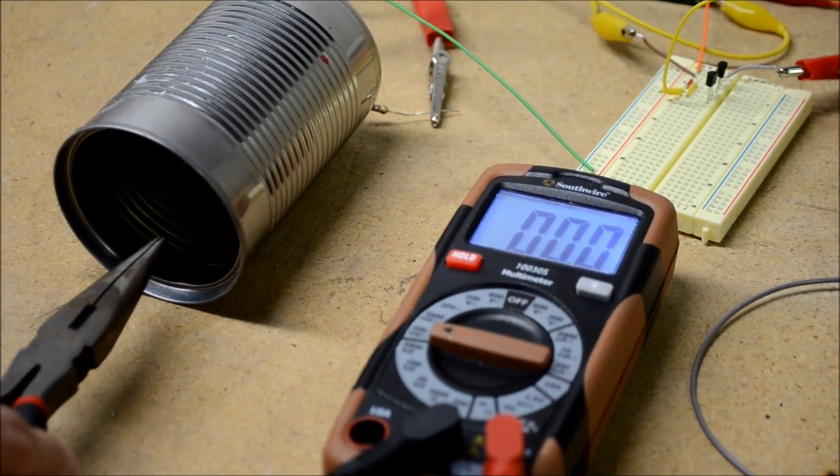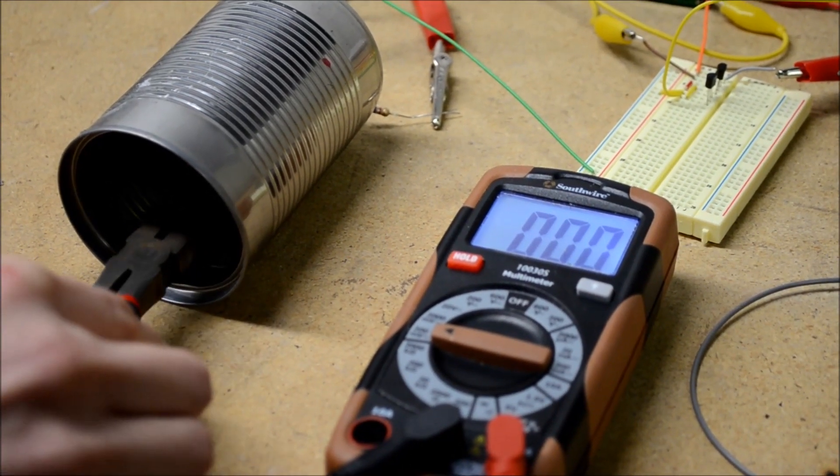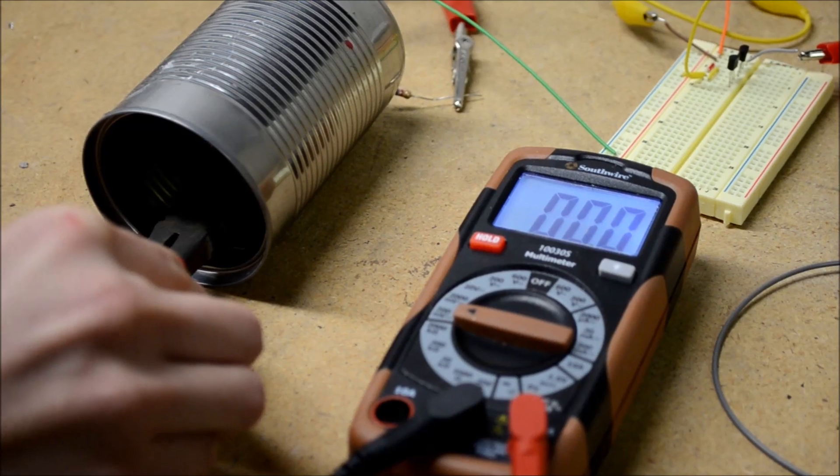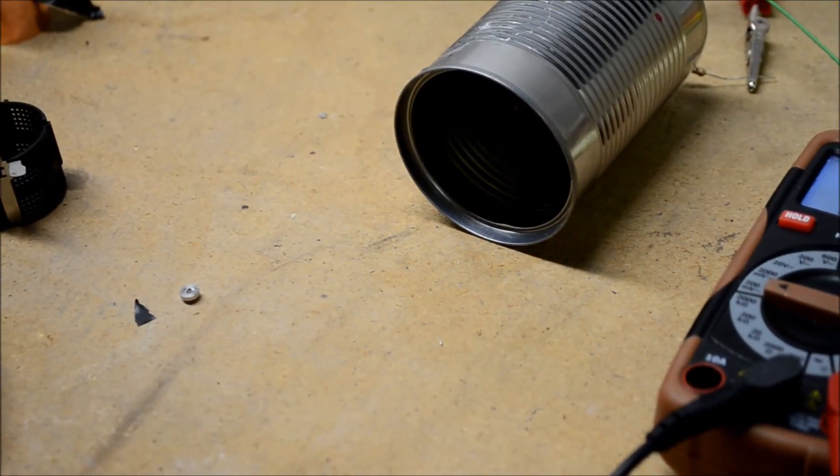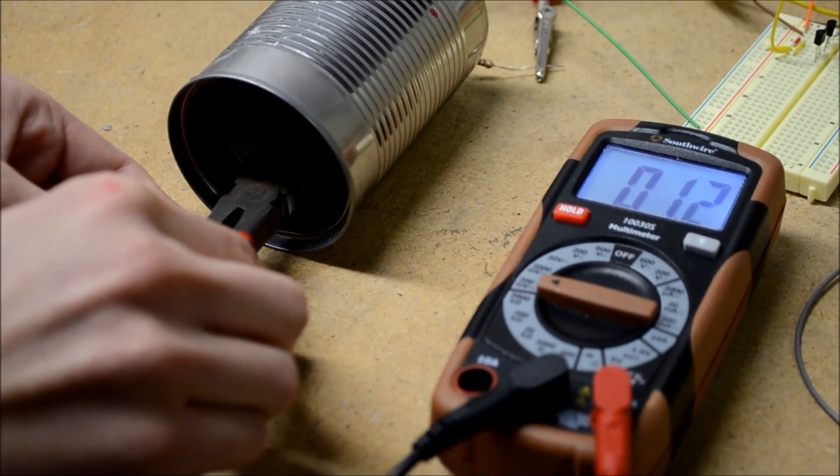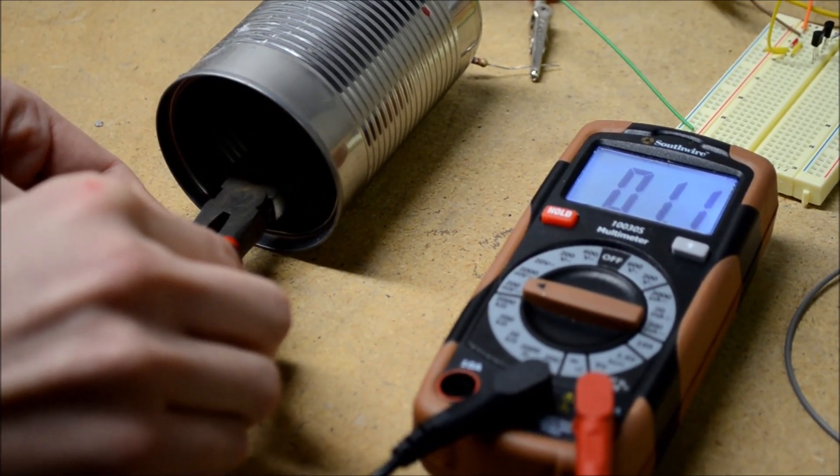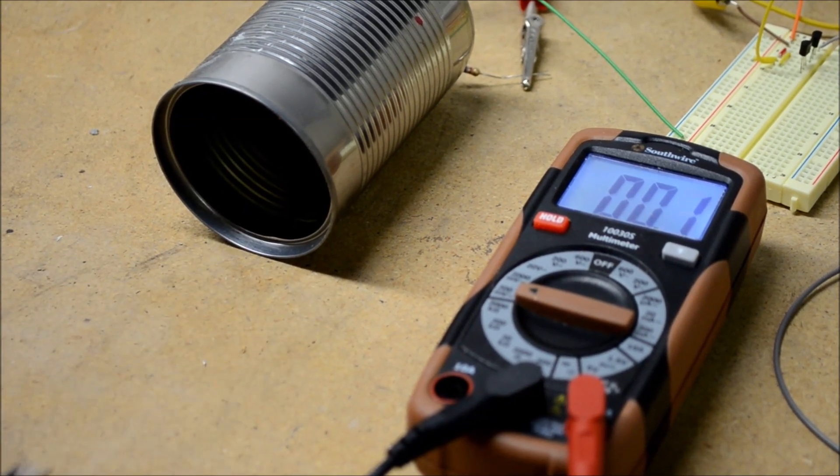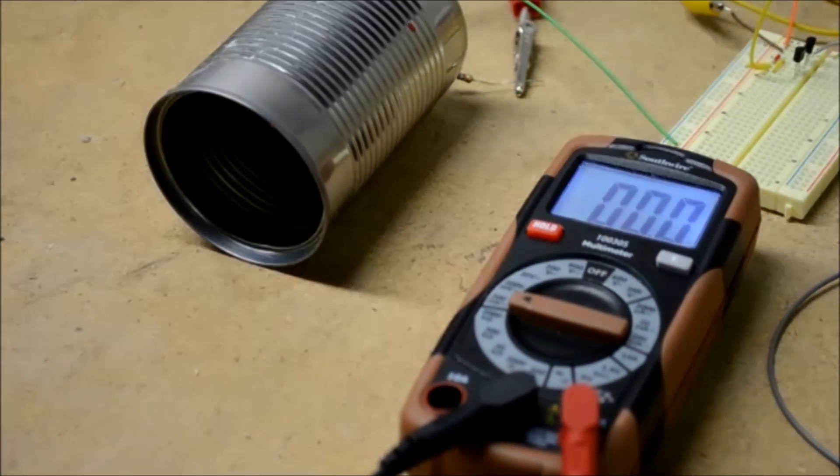Here, we see that moving the pliers close to the detector without a source, the multimeter reads 0 millivolts. When the source is placed near the wire, we see a reading of 1.2 millivolts. This successfully demonstrates the functionality of our homemade detector.